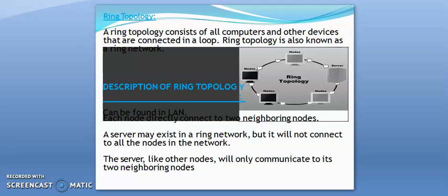A ring topology consists of all computers and other devices connected in a loop, and is known as a ring network. It can be found in LANs. Each node directly connects to two neighboring nodes. A server may exist in a ring network, but it will not connect to all nodes — the server, like other nodes, will only communicate with its two neighboring nodes.